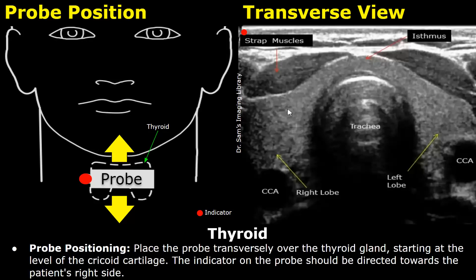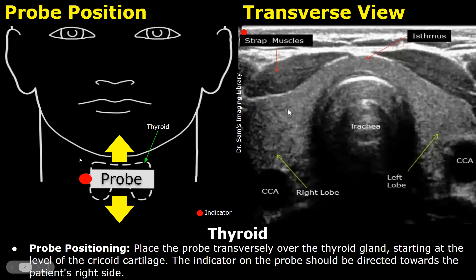Place the probe transversely over the thyroid gland in this manner, starting at the level of the cricoid cartilage. The indicator on the probe will be towards the patient's right side, and you will get this type of image.